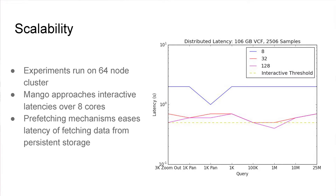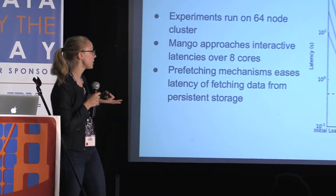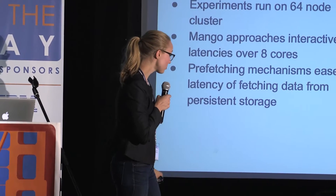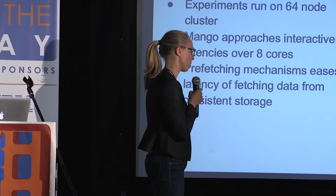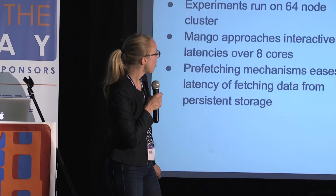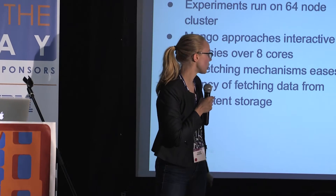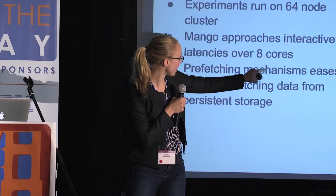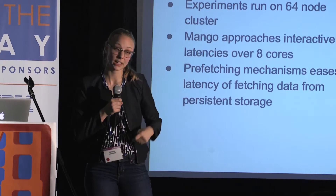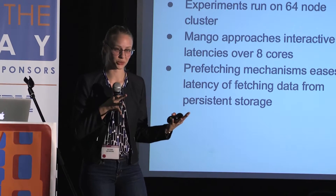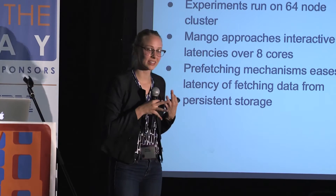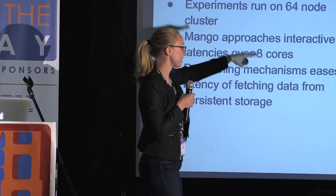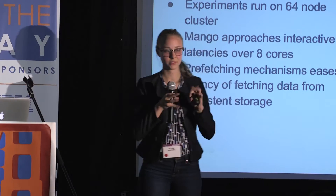Our next question was how Mango actually scales. This was run on the 1,000 Genomes variant data — about 2,500 samples — querying just one chromosome of data. Past eight cores, we start approaching interactive latency. The results begin to flatten out from 32 to 128 cores due to a bug in Spark that we're working to fix, but once fixed, we think the scalability will improve significantly.